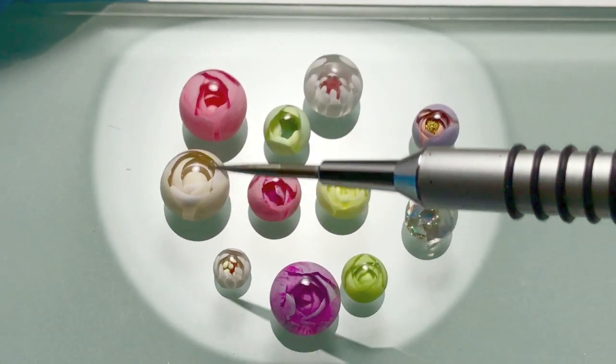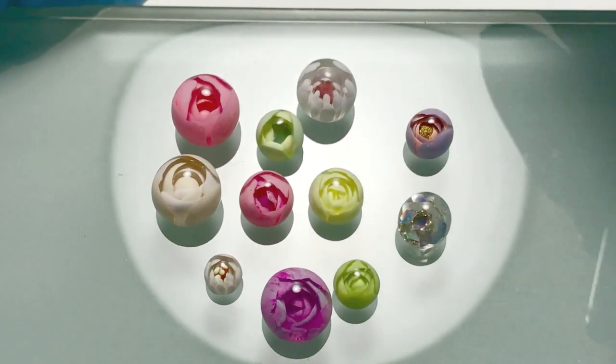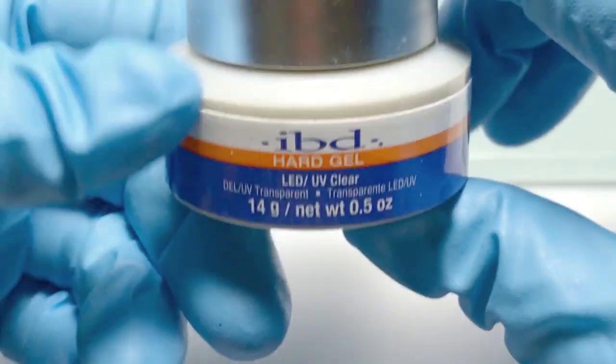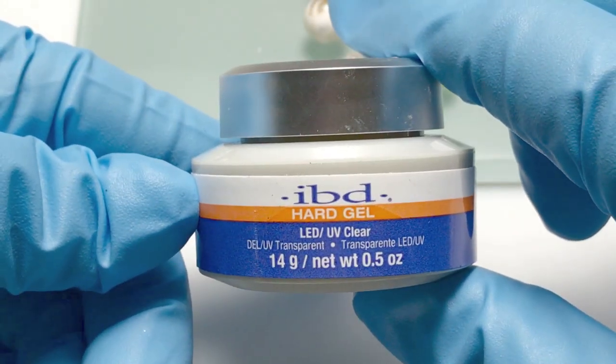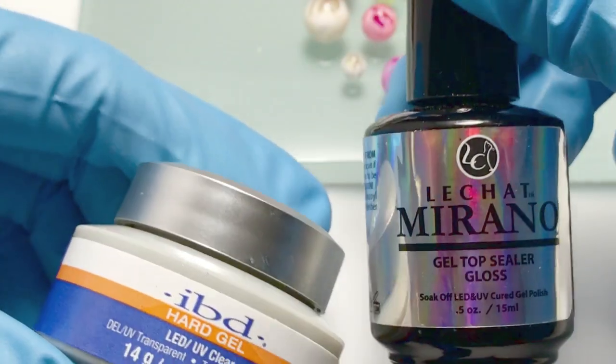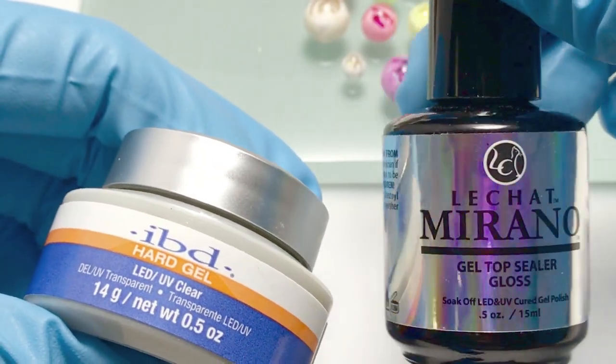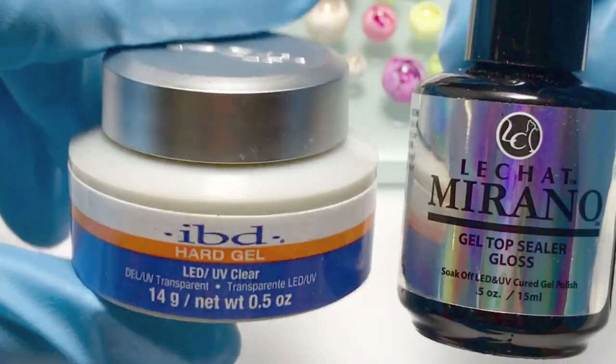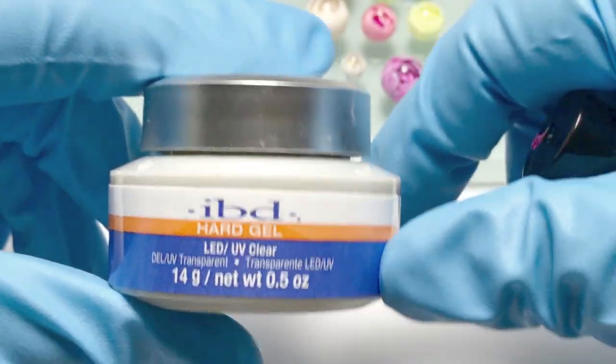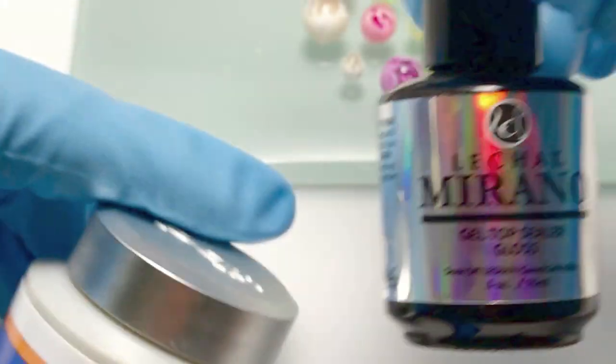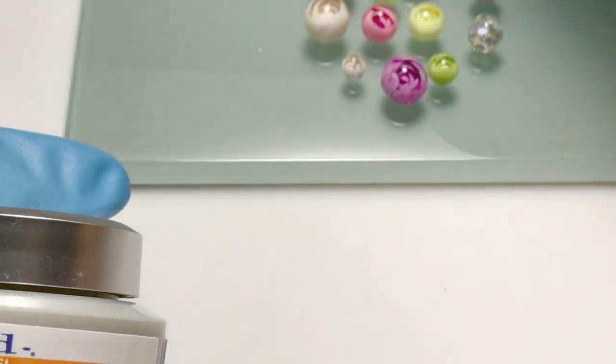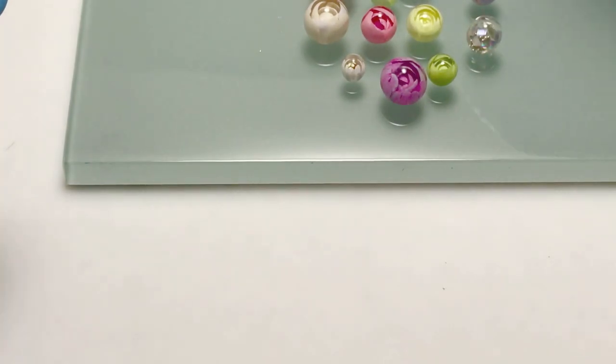The two larger balls are done with just one color. In this case I used IBD hard gel, a very viscous hard gel, but you can use a clear top coat. Just be aware it's not going to be as thick as your builder gel or hard gel, so your layers will be thinner and you won't get as much definition between petals.